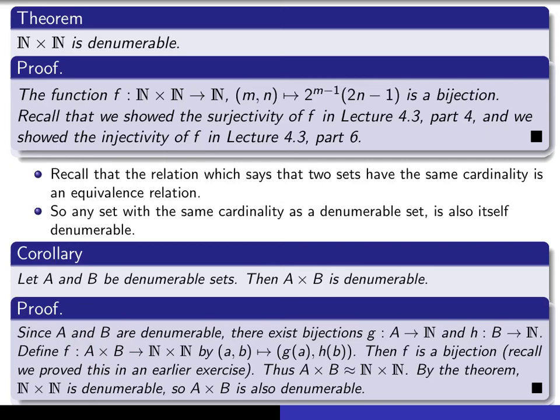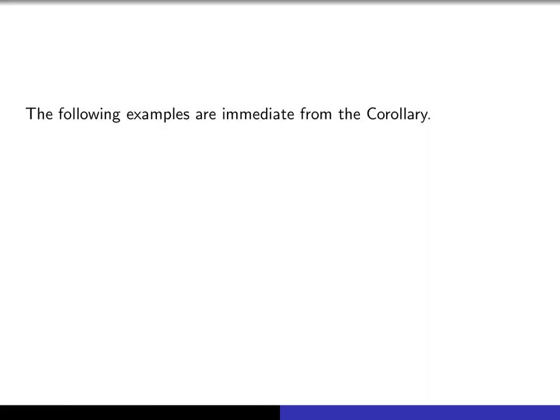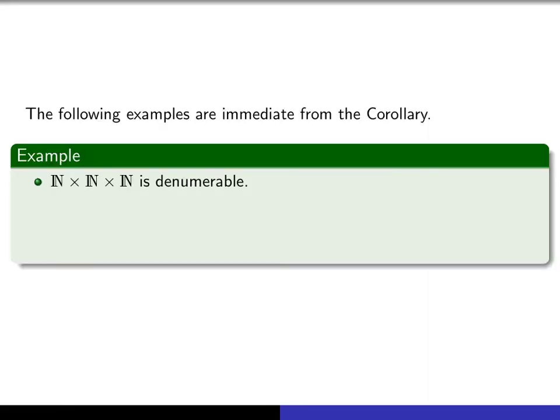That then gives us the ability to write down lots of different examples of denumerable sets. For example, we can take the Cartesian product of three copies of n, because that's a Cartesian product of two sets. Namely, n is denumerable, and now we've just proved n cross n is denumerable, so we've got a product of two denumerable sets, and therefore it's denumerable. Or we could take four copies of n and take their Cartesian product.